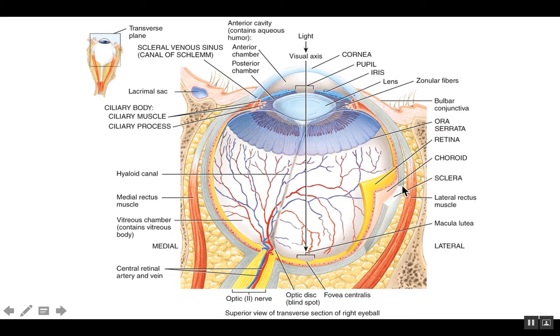Then we reach the eyeball, the outer layer of the eyeball being the fibrous tunic, which is made up of sclera, which is white. And then there's a junction where it turns into the cornea, which is transparent. That cornea is going to let the light in.